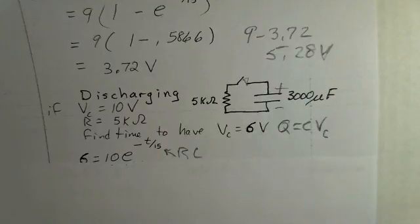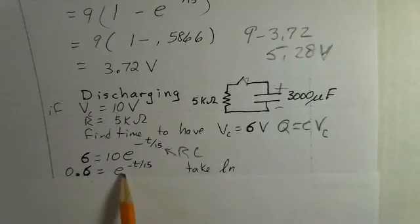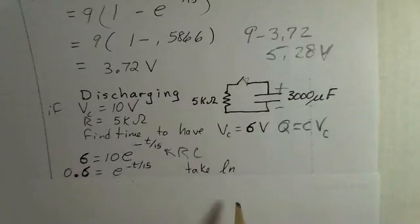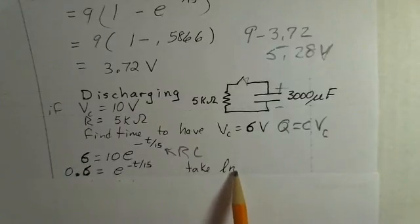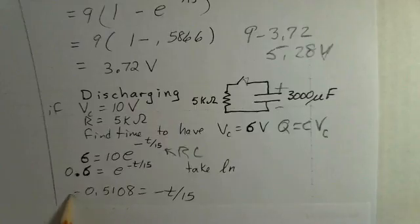Well, how would you solve for T? It's under the control of this exponential function. Your first step would be to divide both sides by 10. We get 0.6 equals E to the minus T over 15. Now, to remove the T from the control of the exponential function, we're going to use the inverse function for the exponential. And that's log base E, the natural log function. Take ln of both sides. When you take the natural log of 0.6, you do get a negative number, roughly 0.5108.